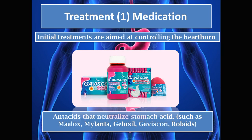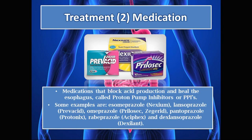For medical treatment of GERD, initial treatments are aimed at controlling heartburn. Antacids can neutralize stomach acid; examples include Maalox, Mylanta, Gelusil, Gaviscon, and Rolaids. We also have medications that block acid production and heal the esophagus called proton pump inhibitors, or PPIs — the most essential drug class for treating GERD. Examples include esomeprazole, lansoprazole, omeprazole, pantoprazole, rabeprazole, and dexlansoprazole.